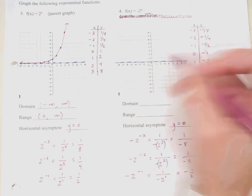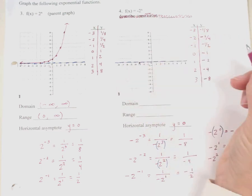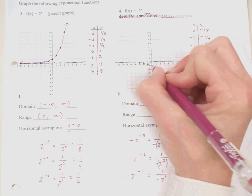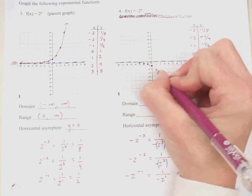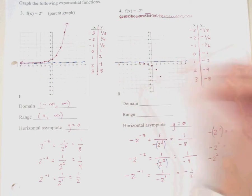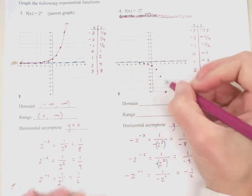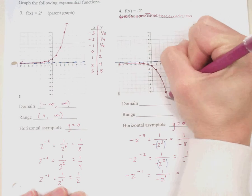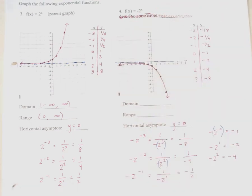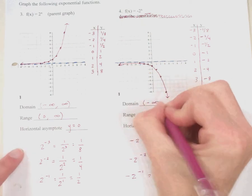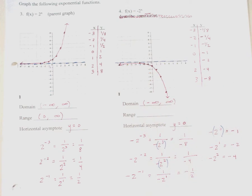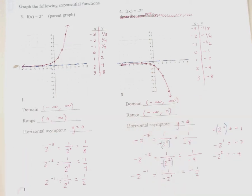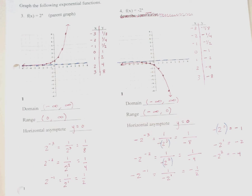Plot your points: negative 3 gives negative 1/8, negative 2 gives negative 1/4, negative 1 gives negative 1/2, 0 gives negative 1, 1 gives negative 2, 2 gives negative 4, and 3 gives negative 8. This graph has been reflected across the x-axis, which is why there is a negative in front of the base.